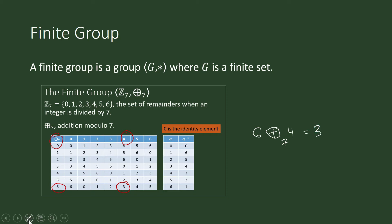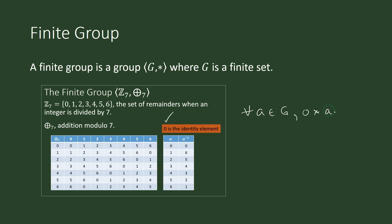What is the identity element in this group? Obviously, it is 0, because for each element in G, 0 star A is equal to A star 0, which is equal to A. That is our identity element. Each element in this group also has a unique inverse. The inverse for 2, for example, is 5, because 2 plus 5 addition modulo 7 is 0. The inverse element is that other element such that when you apply the binary operation on that pair, the result is the identity element.